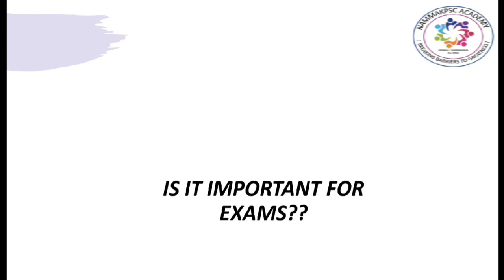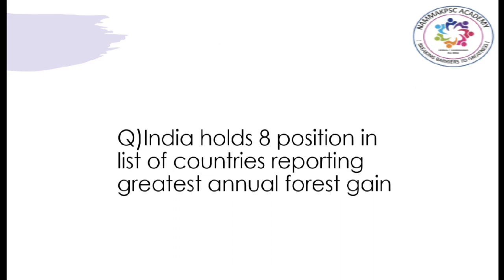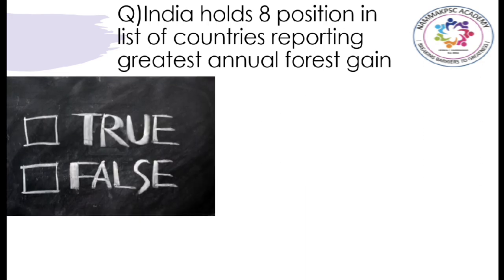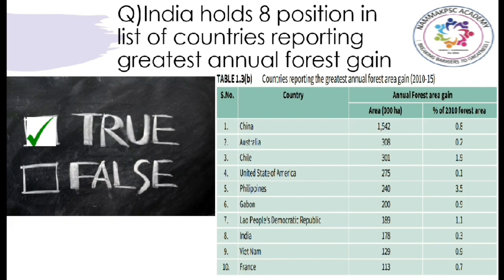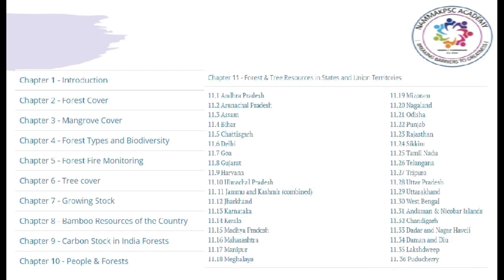The next important question is: is this report important for the exam? The answer is yes. Let us understand how through a question. The question reads: India holds 8th position in the list of countries reporting greatest annual forest gain — true or false? The correct answer is true. You can analyze this statement from the table provided by the India State of Forest Report. From this table, you can see that India holds 8th rank in the list of countries reporting the greatest annual forest gain between the years 2010 and 2015. This shows that UPSC and KPSC can frame statistics-oriented questions, which we can answer by reading reports like the India State of Forest Report. This report provides various definitions and statistics regarding India and individual states.